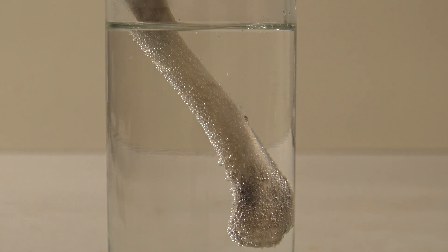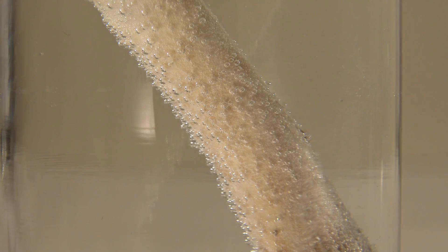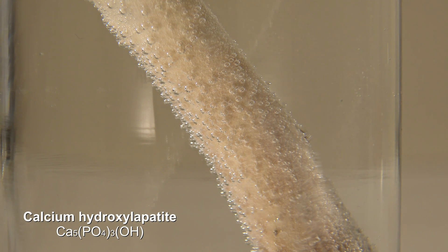After a short while bubbles of gas could be seen on the surface of the bone, which were air that was released and carbon dioxide. So it's possible to guess that bones are mainly calcium carbonate. But this is only present in very small amounts. The main part of the calcium lattice is calcium hydroxyl apatite.